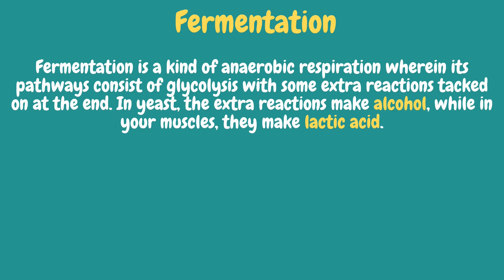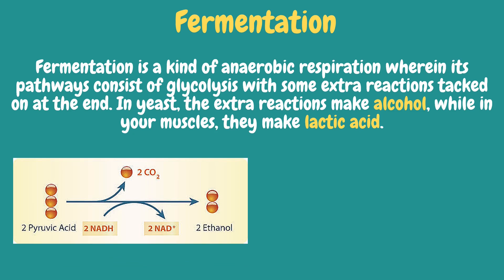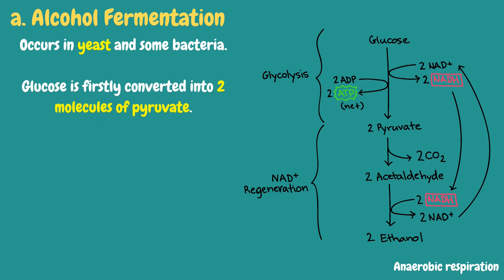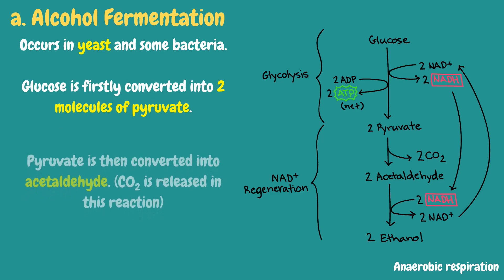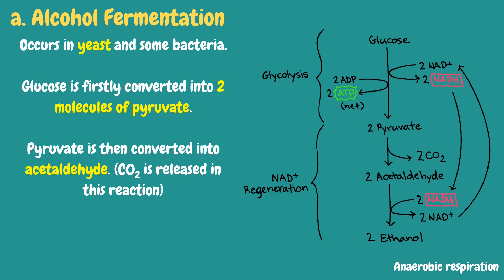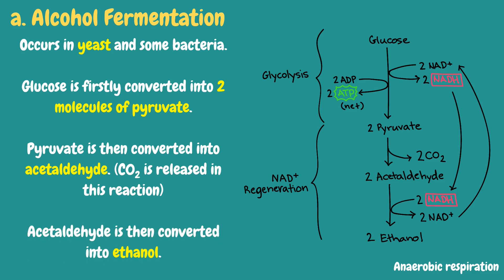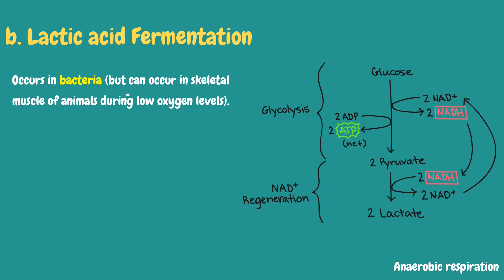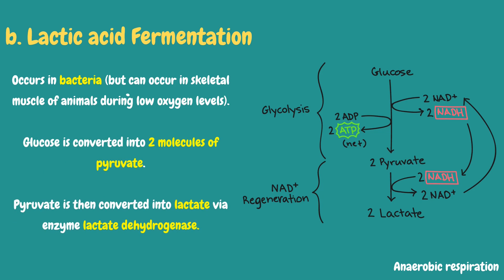Fermentation is a kind of anaerobic respiration whose pathways consist of glycolysis with some extra reactions tacked on at the end. In yeast, the extra reactions make alcohol, while in muscles they make lactic acid. Alcohol fermentation occurs in yeast and some bacteria: glucose is converted into two molecules of pyruvate, pyruvate is then converted into acetaldehyde with carbon dioxide released, and finally acetaldehyde is converted into ethanol. Lactic acid fermentation occurs in bacteria but can also occur in skeletal muscle of animals during low oxygen levels, where glucose is converted into pyruvate, then into lactate by the enzyme lactate dehydrogenase.